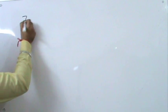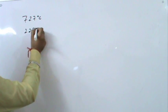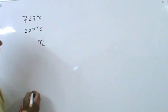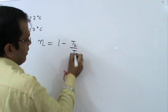An engine is supposed to operate between two reservoirs at temperature 727 degrees Celsius and 227 degrees Celsius. The maximum possible efficiency of such an engine is - we know that maximum efficiency is given by 1 minus T2 by T1.